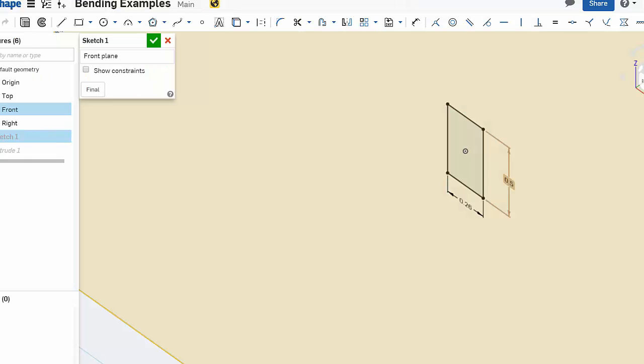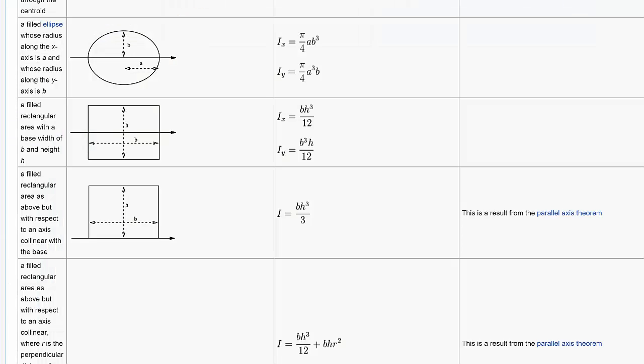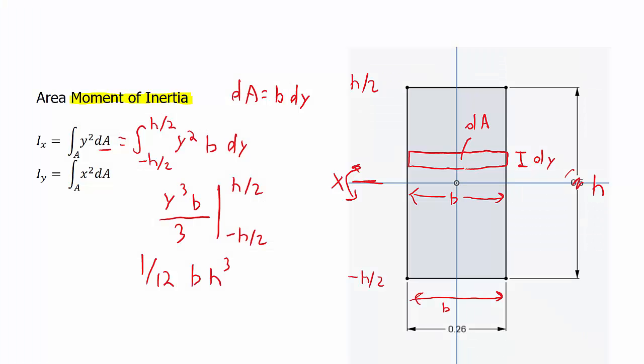That's actually, if we look at the table, this is just a table on Wikipedia of a list of area moments of inertia. We can see here that our formula that we derived matches that for a rectangle. Noting that this is where the axis of rotation is around the center of the rectangle. If we move the axis of rotation, then we get a different answer. We get base height cubed over 3. And it says this is a result of the parallel axis theorem.